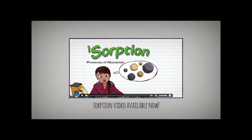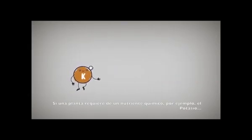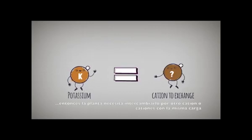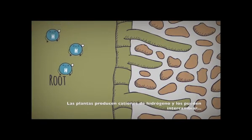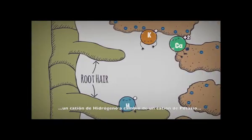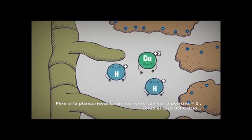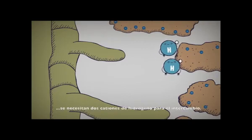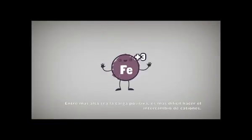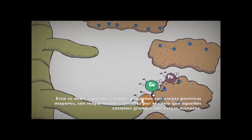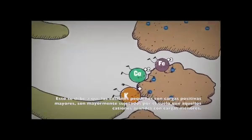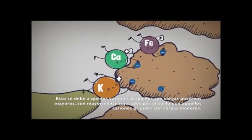Back to cations. Basically, if a plant wants a nutritious cation like potassium, it will need to exchange it for another cation or cations of equal charge. Luckily, plants produce hydrogen cations that they can exchange — one hydrogen cation for one potassium cation. But for nutrients with a positive charge of two, like calcium, two hydrogen cations are needed. The higher the positive charge, the harder it gets to exchange or trade cations, because a cation with high positive charge and small size is preferentially held by the soil over those with lower charge or larger size.